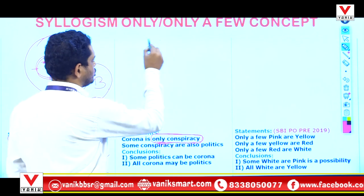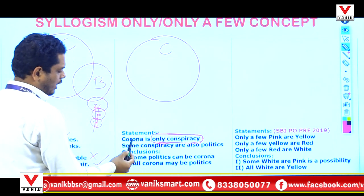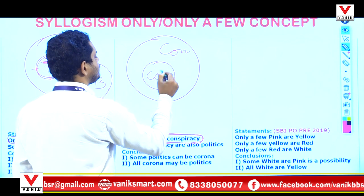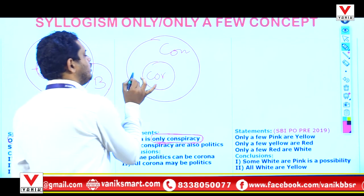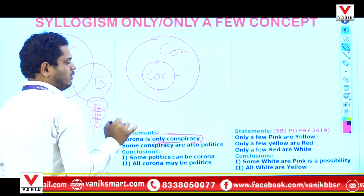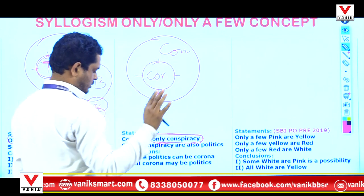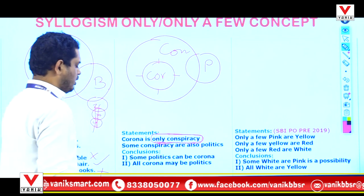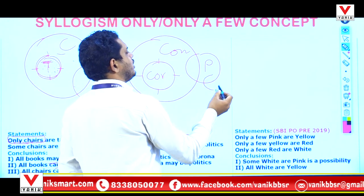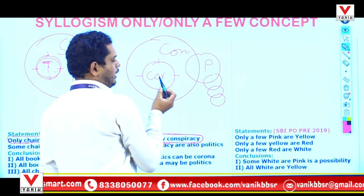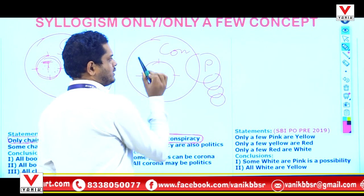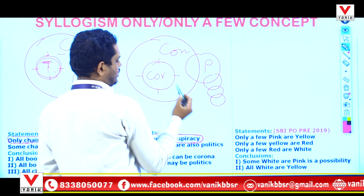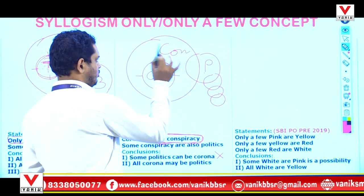This is conspiracy and this is corona. Keep in mind that the part which is the inner circle is negative from all others. Some conspiracy are also... this is conspiracy, this is politics. You can add any other item with P — no problem — but keep in mind corona cannot be the part of any other item except conspiracy. Some politics can be corona — this is impossible because corona is positive with only conspiracy.